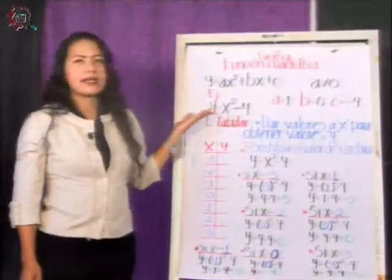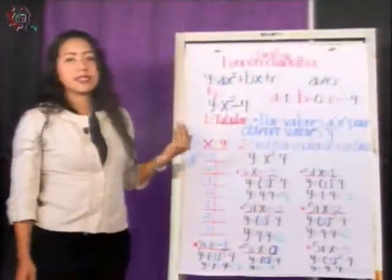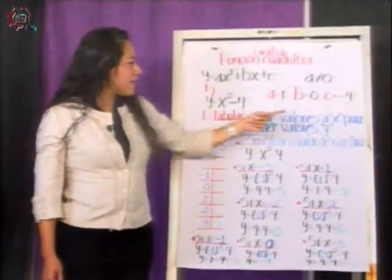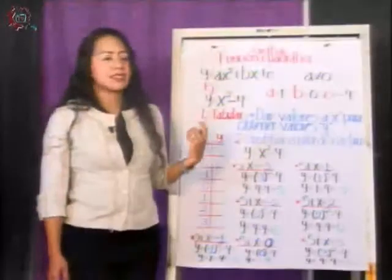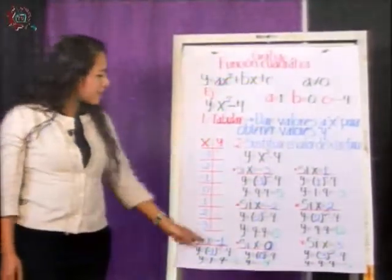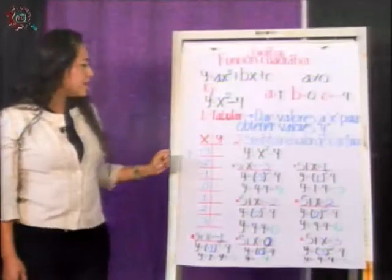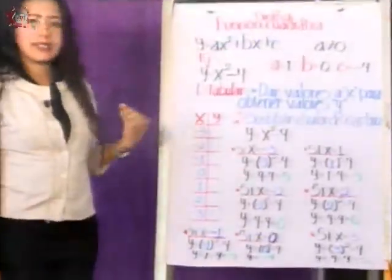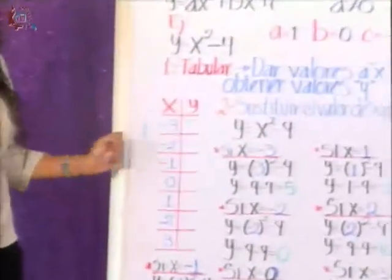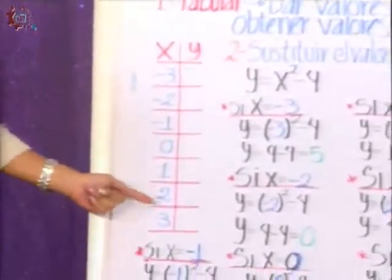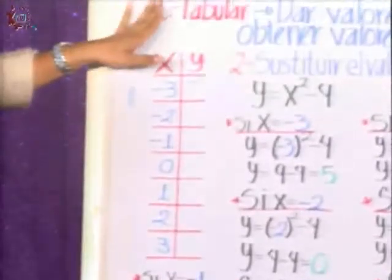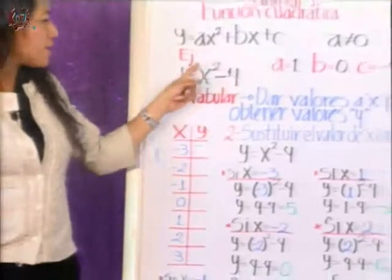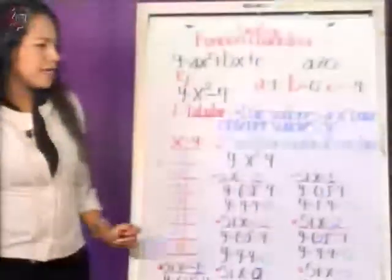Now, how do we graph this function? The first thing we have to do is tabular. What does tabular mean? Tabular is giving values to x to obtain values of y. For that we are going to do a table like that I am showing here, where these values of x we establish ourselves. In this case I have given values of -3, -2, -1, 0, 1, 2, 3. Now we are going to substitute in this function the values that we give to x. So, let's start.